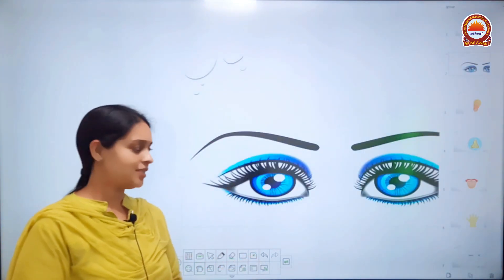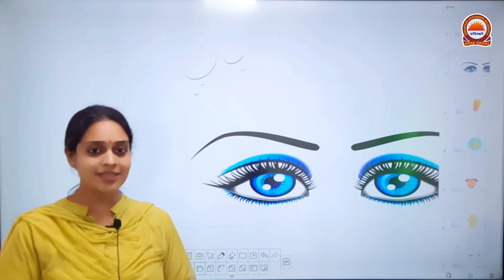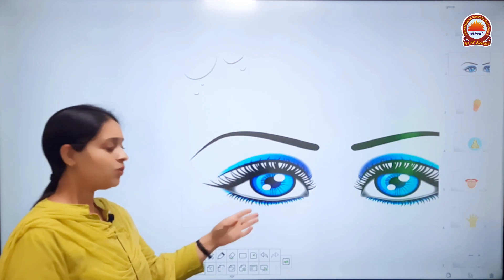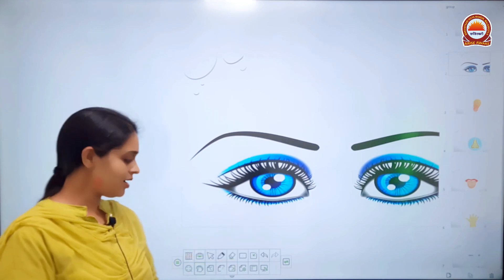Number one: eyes. What do you do with your eyes? We see with our eyes.